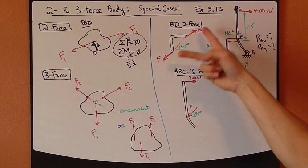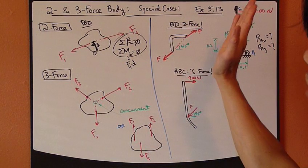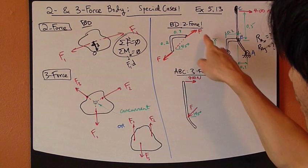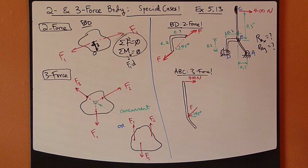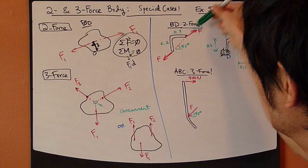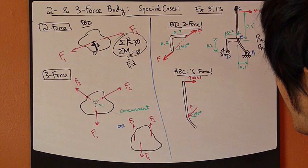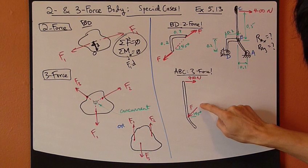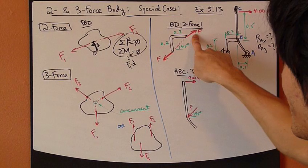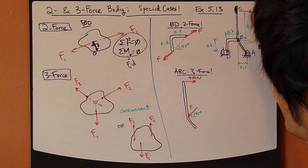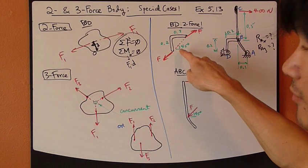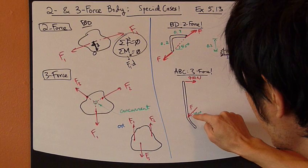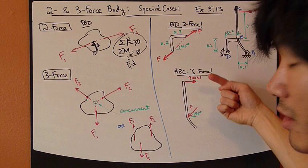Knowing that these two forces must act along the same line of action, you know exactly how they are pointing. The piece is 0.2 meters wide and 0.2 meters long, so this triangle is a 45-degree triangle. So this force is acting at 45 degrees. Moving on to the A-B-C piece: the force at B on the A-B-C piece is equal in magnitude but opposite in direction to the force exerted by the B-D body, by Newton's third law.